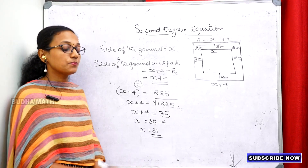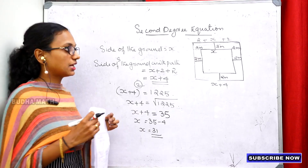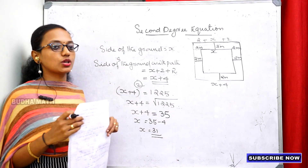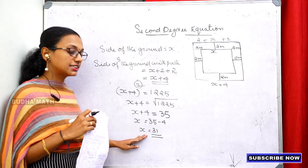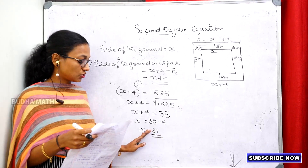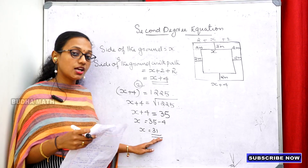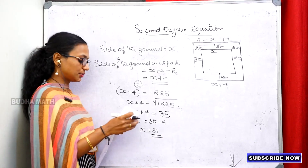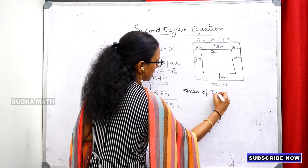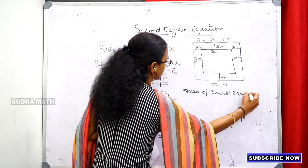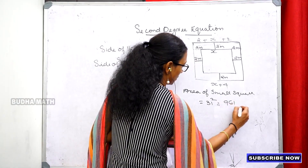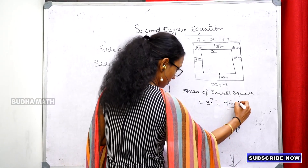We find the value of x. The root of 1,225 is 35, so x plus 4 equals 35, giving x equals 31. The side of the ground is 31 meters, so the area of the ground is 31 squared, which is 961 square meters.